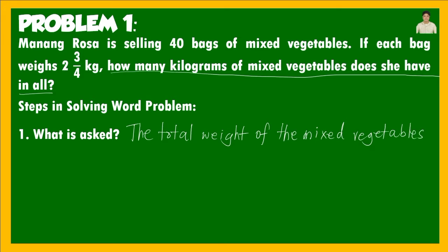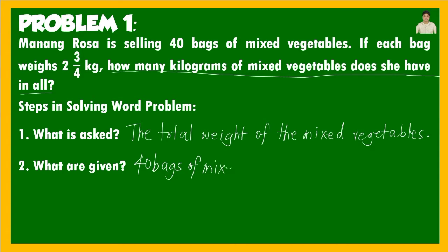Next: What are given? These are the pieces of information that will help us solve the problem. The first given is 40 bags of mixed vegetables, and the second given is 2 and 3 fourths kilograms — the weight of 1 bag.